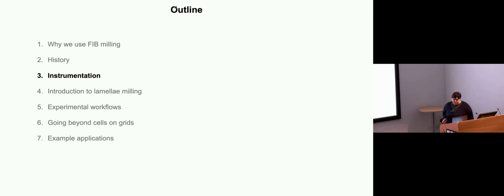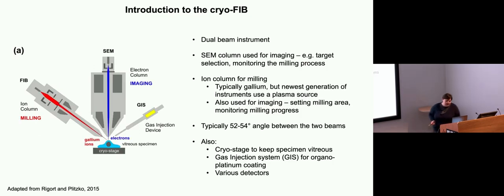Now I've done some basic introduction, I want to move on to talk about the instrumentation. This schematic is a basic overview of what these instruments look like. It's a dual beam, so you have the SEM column and the ion column, and these are approximately 50 degrees angle between them. It depends a little bit on manufacture and specific instrument. The SEM column is there for imaging, the FIB column for milling but also imaging as well.